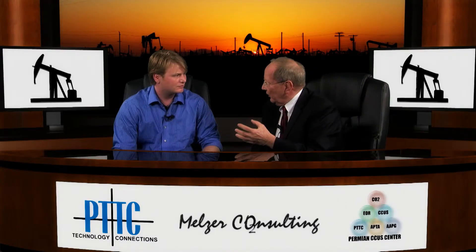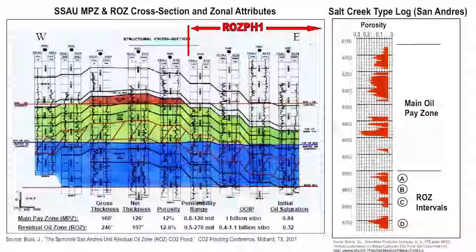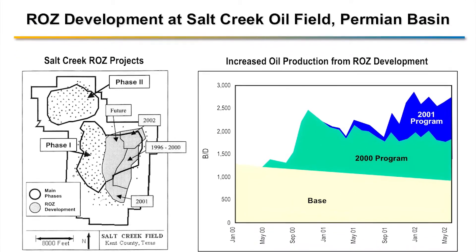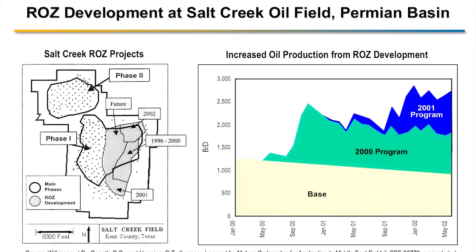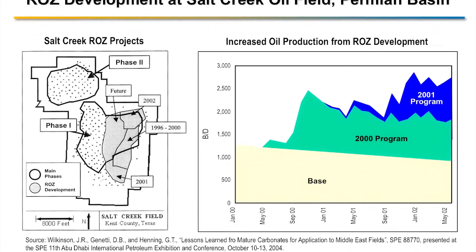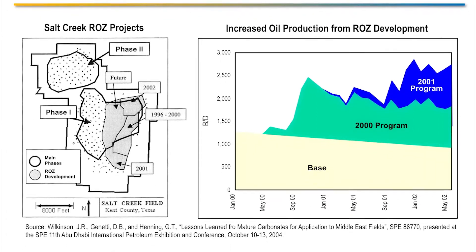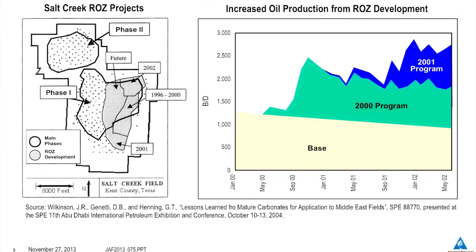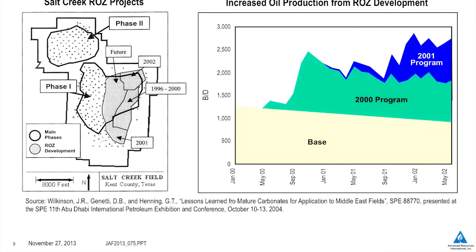Do you have another example of increased production due to the ROZ? Another field would be Salt Creek. I had shown a log on the Salt Creek field earlier. This is an older residual oil zone project operated by ExxonMobil — it started back in 2000 and they've added on to that. At the bottom of the slide you'll see a reference to this particular project.